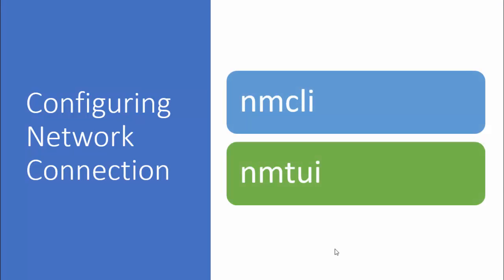For configuring a network, you can use two things: either nmcli, which is a command-based tool, or nmtui, which provides a sort of graphical interface. I am going to focus on nmcli and I recommend you practice only using nmcli, which will be very easy for implementation.